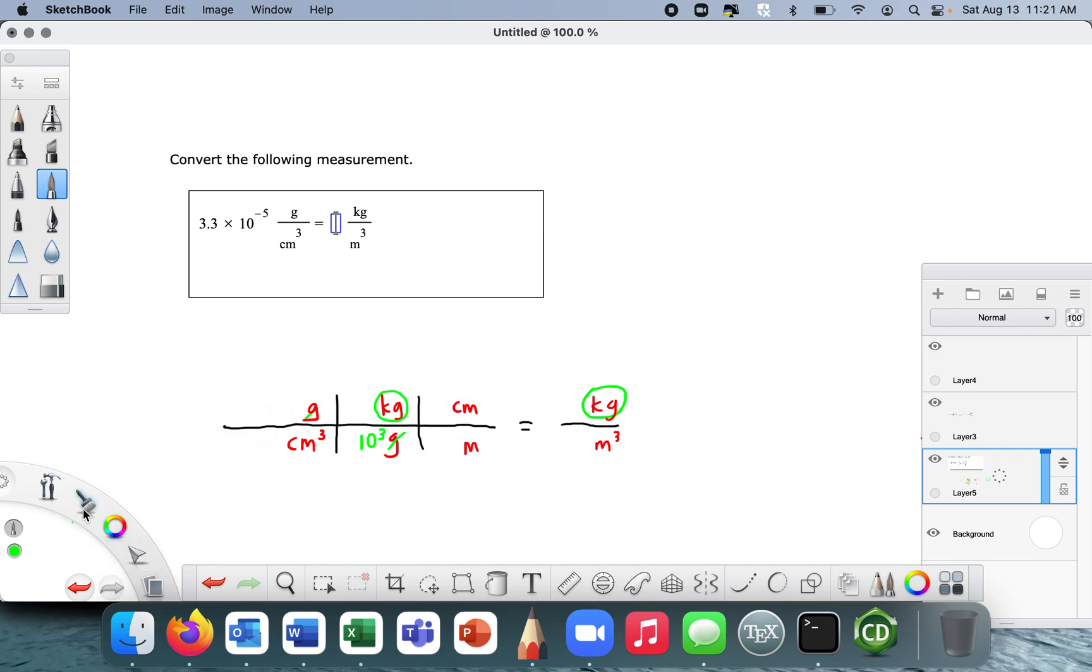And we know centi means 10 to the minus 2, so I'm going to say 10 to the minus 2, right? And so I've gotten rid of one of those centimeters, but I need to get rid of all three, and the way we're going to do that is we're going to cube it like that, all right?